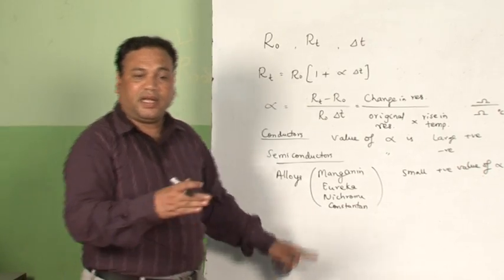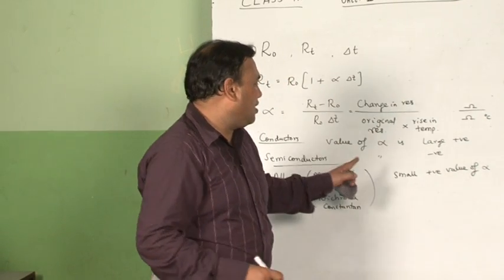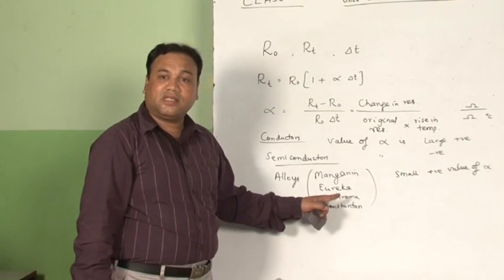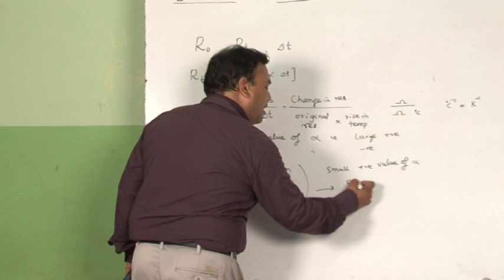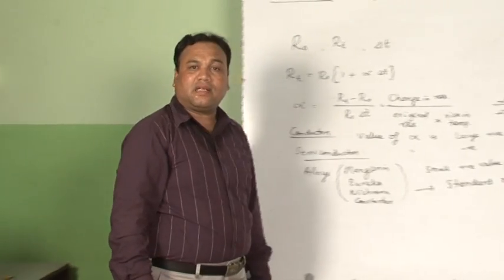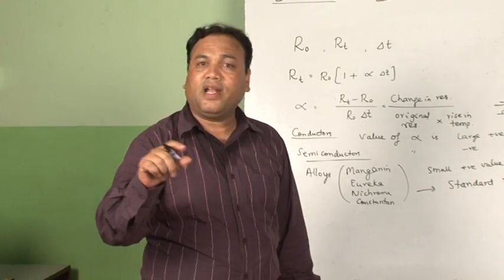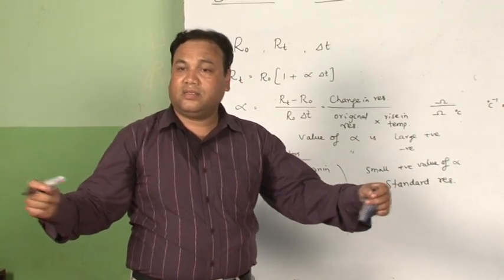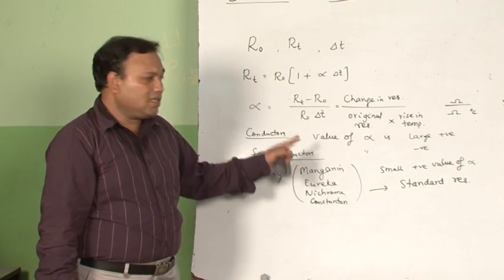Because of this small positive alpha, the value of resistance of these four materials always remains almost the same. Therefore, these four alloys are used to make standard resistance coils. In the laboratory, resistance coils, meter bridge wires, and potentiometer wires are all made of these materials.